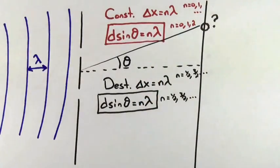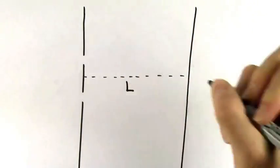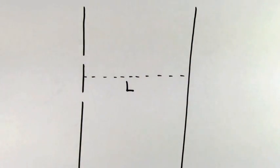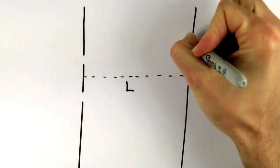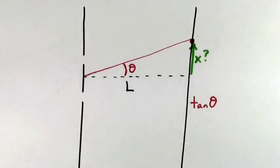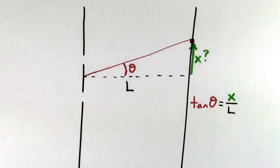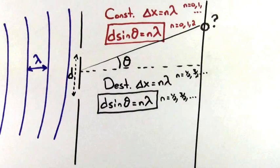Remember that lambda is the wavelength, and d is the slit spacing. Also, for some problems you might have to relate the distance between the double slit and the wall, L, to the vertical distance from the center line to a point on the wall, x. They're related because tangent of theta equals opposite over adjacent — x is the opposite and L is the adjacent for this right triangle. So this should be everything you need to solve double slit problems.